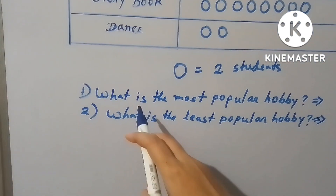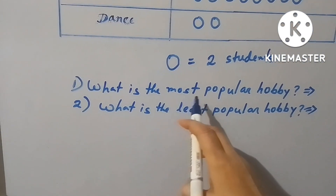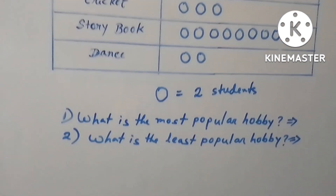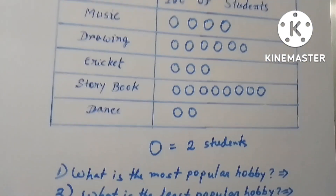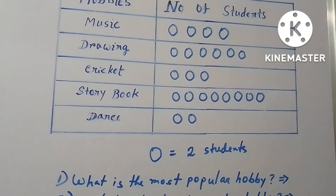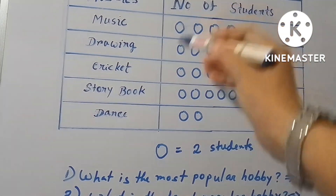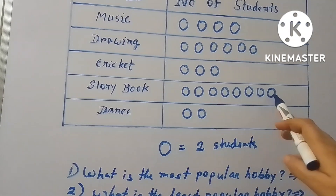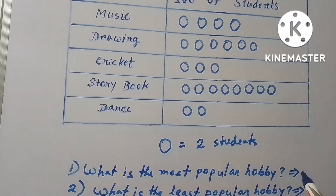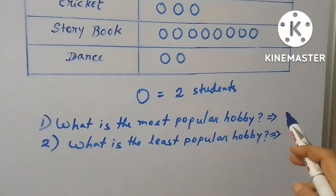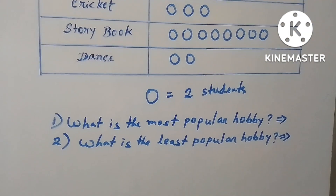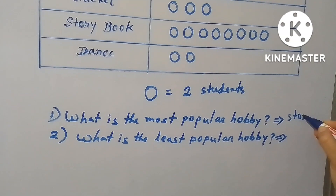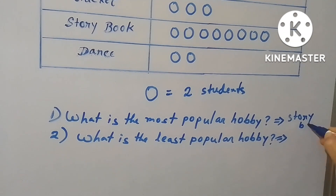Suppose there are two questions: what is the most popular hobby and what is the least popular hobby? Let's find the answer to the first question. You can see that eight circles are there against storybook, and three circles means three multiplied by two equals six students. So the most popular hobby is storybook.